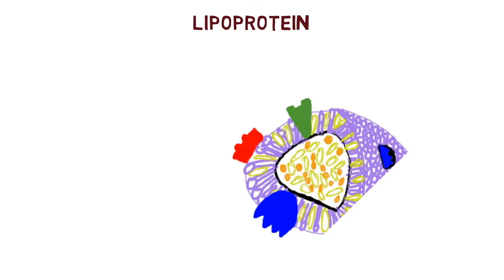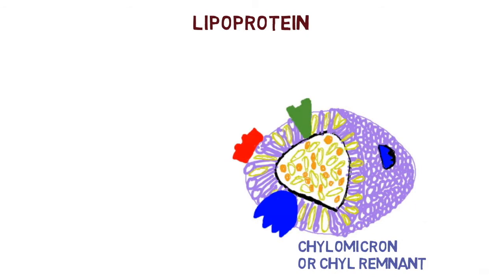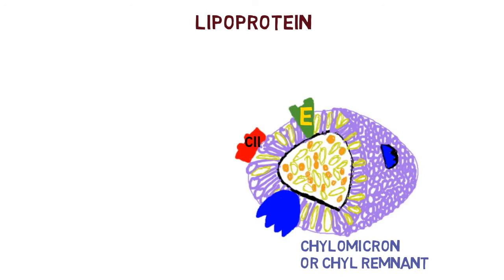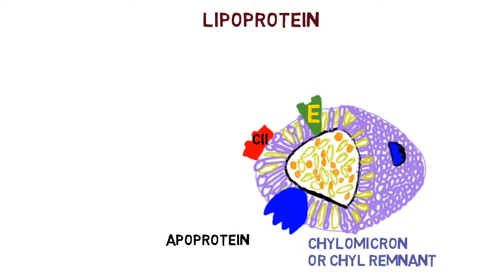Looking further at this chylomicron remnant, there are multiple types of apoproteins on it. We have apoprotein C2, ApoE, and the other one is called apoprotein B48. So we have ApoE, ApoC2, and apoprotein B48 on the chylomicron remnant.